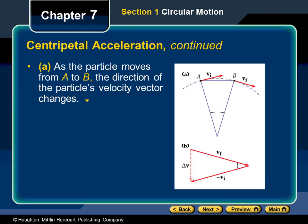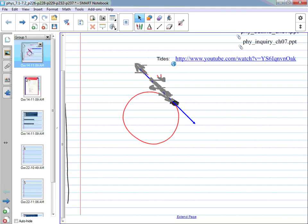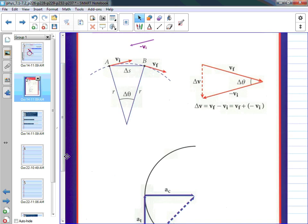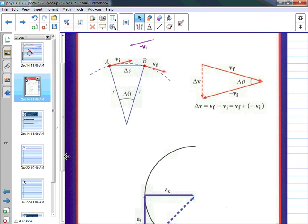Let's look at vectors to see how the change in direction results in a center-directed acceleration. We have a bob first at position A, then at position B. As it moves through time from position A to position B, at position A its initial velocity is tangent to the circle.